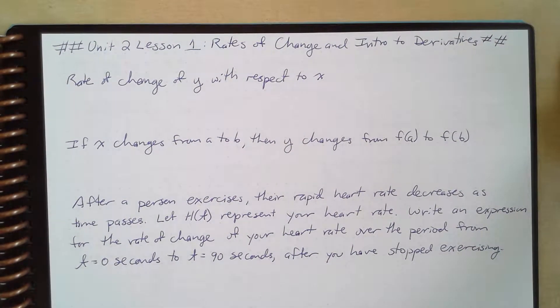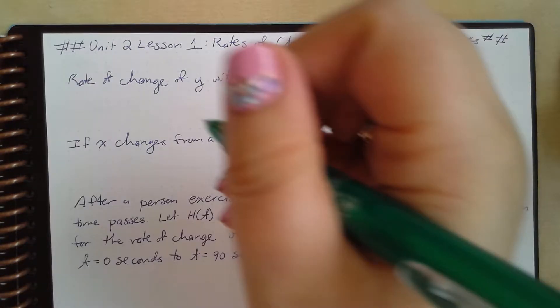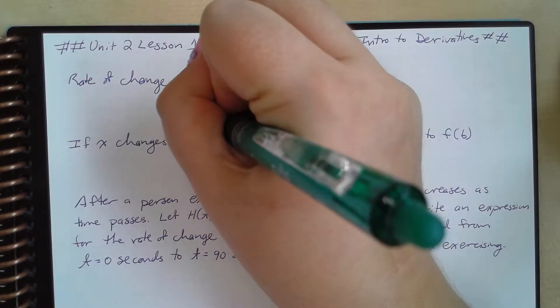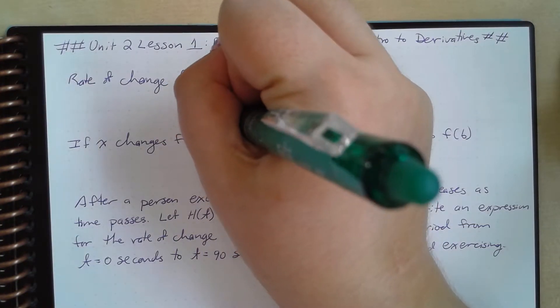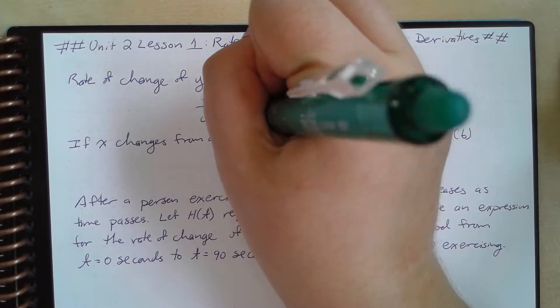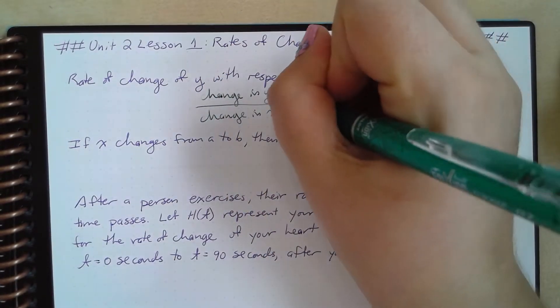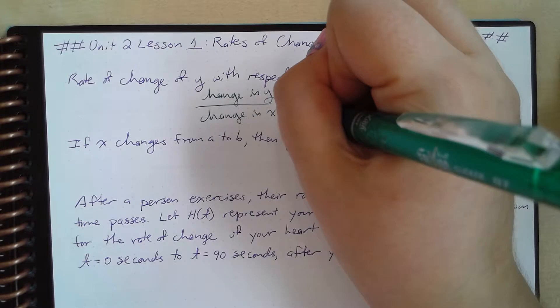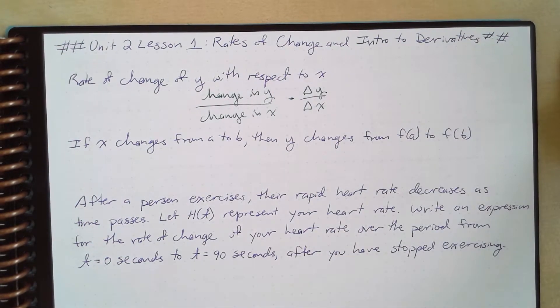Today, I'd like to talk about rates of change and introduce you to derivatives. Actually, rates of change are something you've already dealt with in life. So if we have the rate of change of y with respect to x, that's just going to be the change in y over the change in x, which you can also write as delta y over delta x. That should look familiar to you. That's basically slope, right?